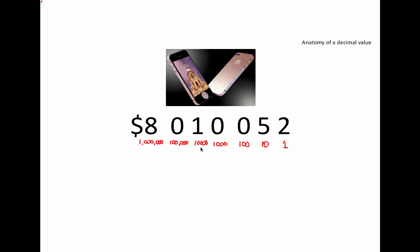So we know that there's 8 millions, 1 ten thousand, 5 tens, and 2 ones. We add all of these numbers together and that gives us the final value.